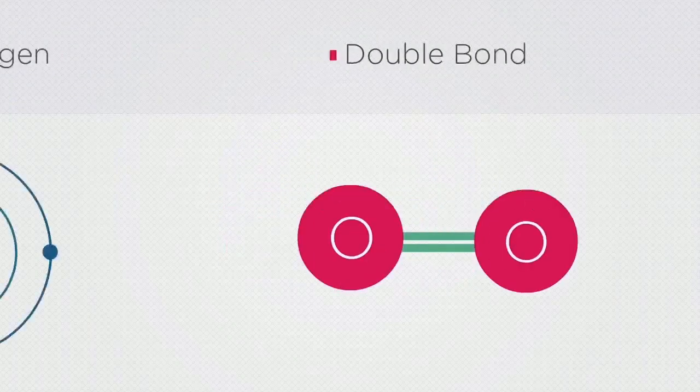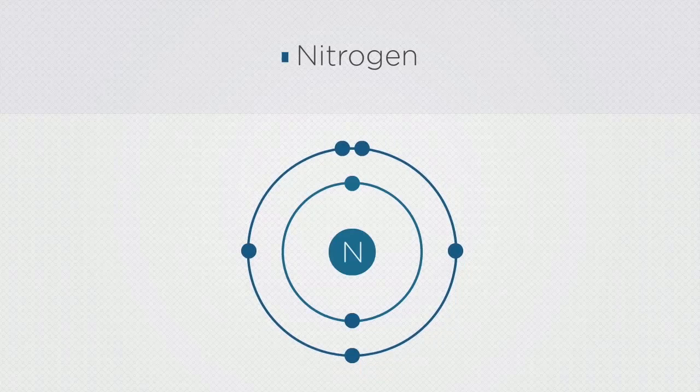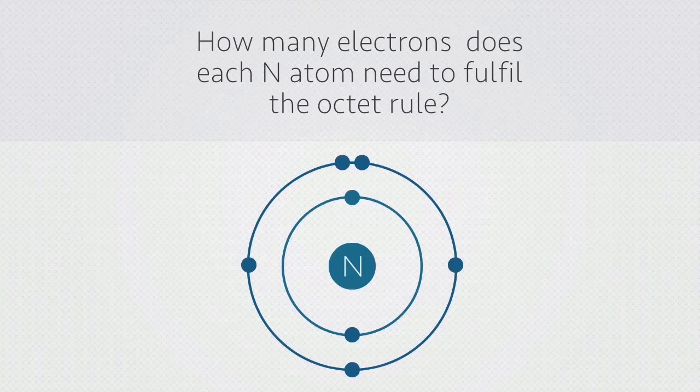This is called a double bond. Each of the nitrogen atoms has five electrons in their outer shells. How many electrons, therefore, do you think each will need to share to fulfil the octet rule?